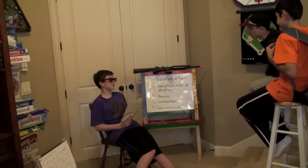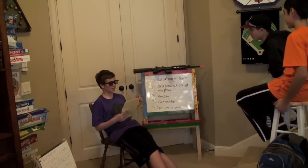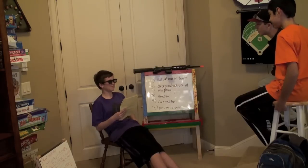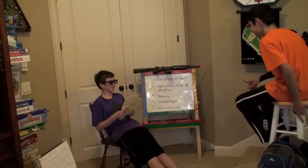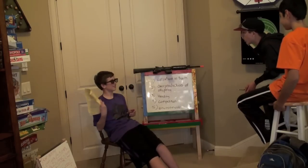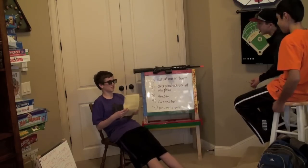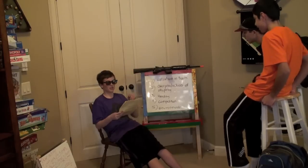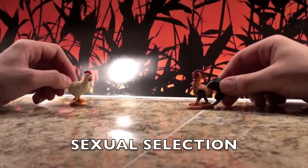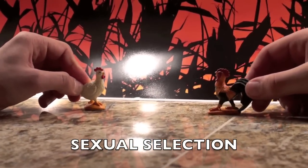What's your name? My name is Mr. Ballard, never heard of that one before. Today we're going to learn about the five components of natural selection. Variation in traits. Who's got the second one? Offspring. What's the third one? Heredity. What is the fourth one? Competition. What's the last one? Environment. Those are the five components of natural selection.